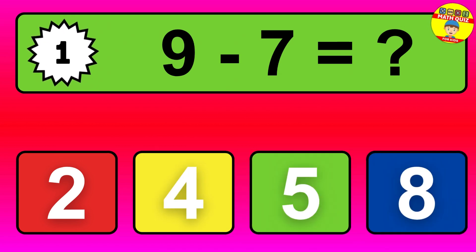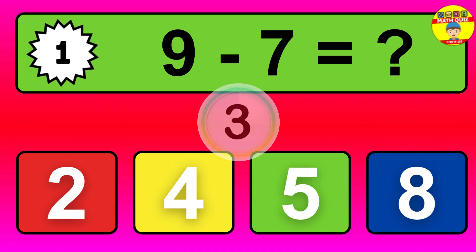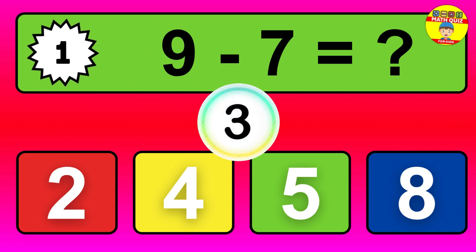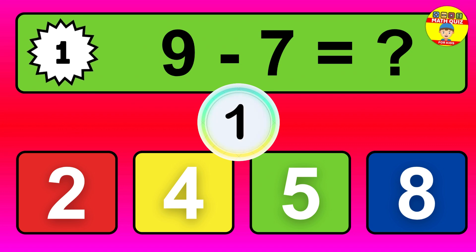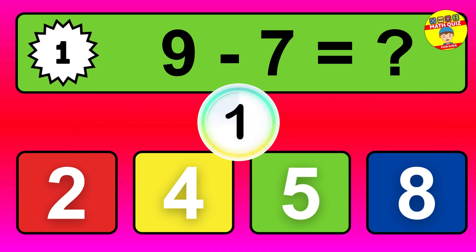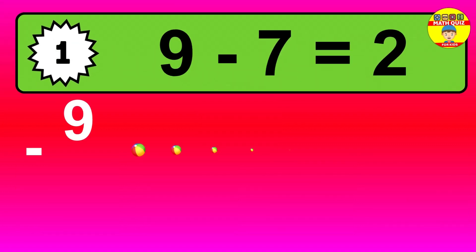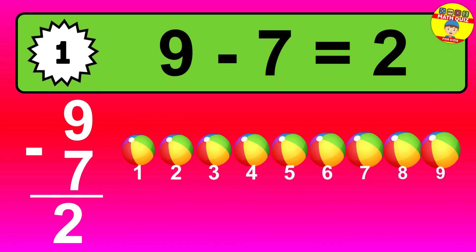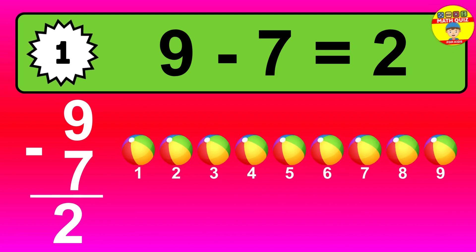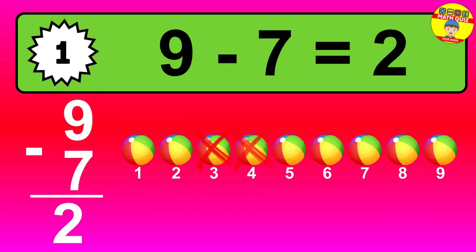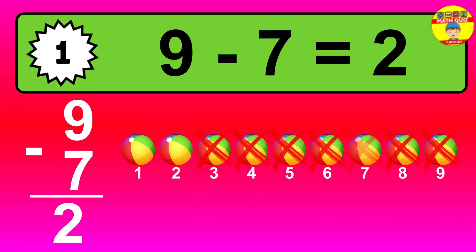Question one: nine minus seven equals what? The answer is nine minus seven is two. Let's count it. One, two.